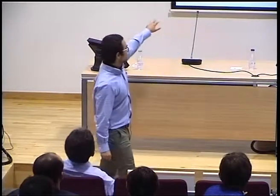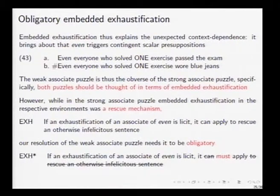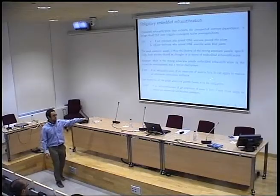However, there's a difference between the two solutions. With the strong associate puzzle, embedded exhaustification is a rescue mechanism — if you can apply it, you do. Here I have to say something stronger: the embedded exhaustification is obligatory. Specifically, if an exhaustification of an associate of 'even' is licit, it must apply. This might remind you of other principles in grammar where if something is possible, it must apply.